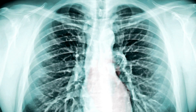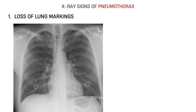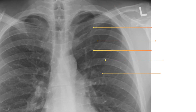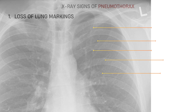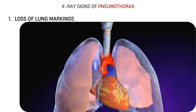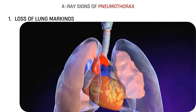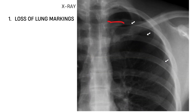Let's build up the signs one by one. First, loss of lung markings. In a normal x-ray, the lung field contains fine vascular markings that reach all the way to the edges. But when free air enters the pleural space, it separates the lung from the chest wall. This creates a region of pure air with no vessels, which appears as a dark, featureless zone. It's usually at the top or outer edges of the lung, because air rises when the patient is upright — it first collects in apical or lateral subpleural areas. That's where you check first, even in subtle cases.